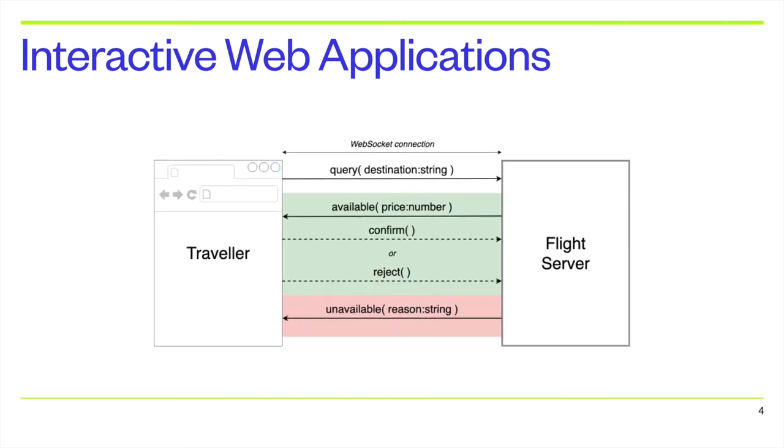For example, we can have a flight booking service where the traveler interacts with the flight server through the web browser. The developer needs to make sure that both endpoints agree on how to perform a flight ticket query.